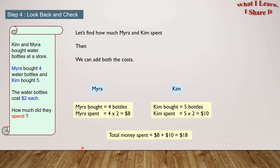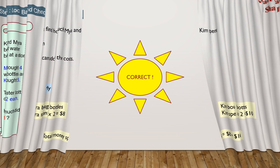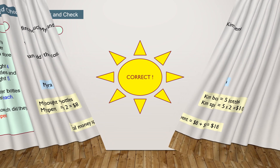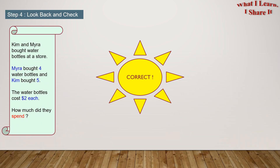So total money spent equals $8 plus $10, which equals $18. And this means our answer is correct! We solved the problem!